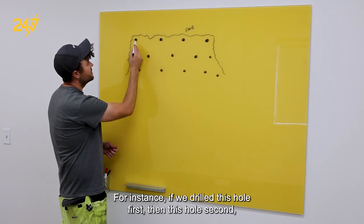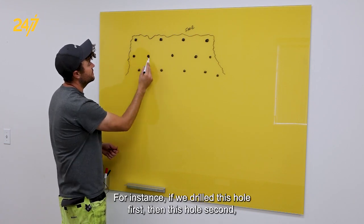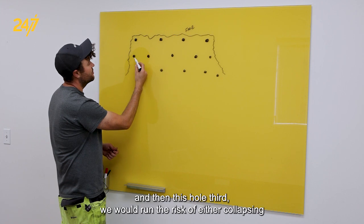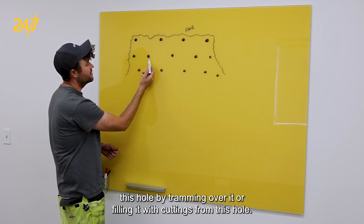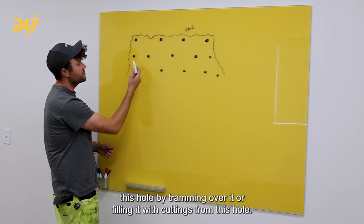For instance, if we drilled this hole first, then this hole second, and then this hole third, we would run the risk of either collapsing this hole by tramming over it or filling it with cuttings from this hole.